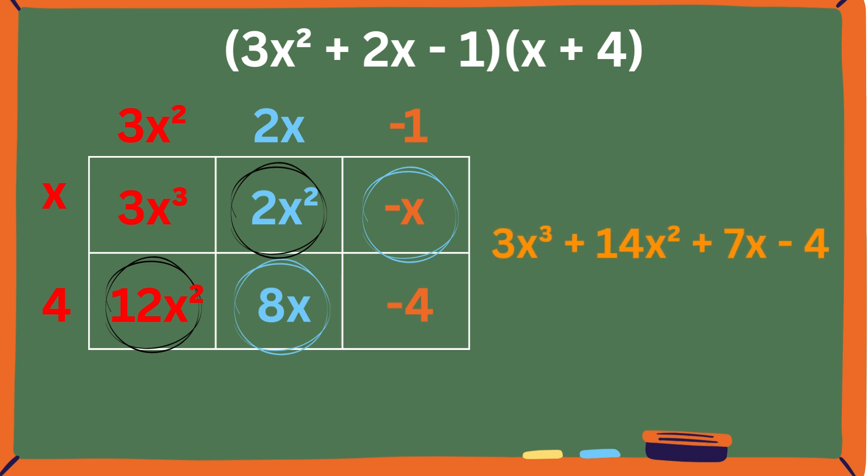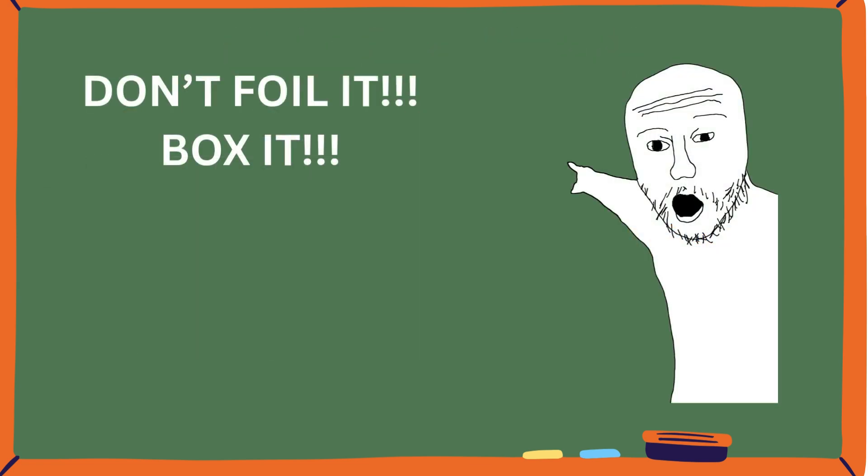Clean. Organized. Fast. You just did what looks like a beast of a problem in a few lines. So next time you're stuck multiplying polynomials, don't FOIL it. Box it. This one visual trick will save you hours and it works every time.